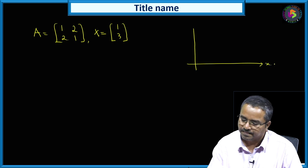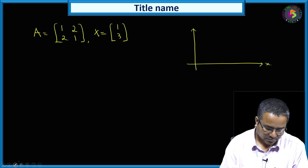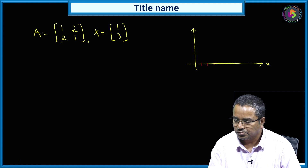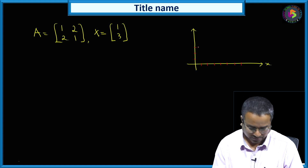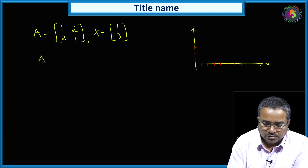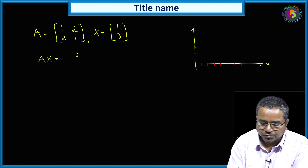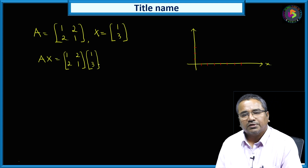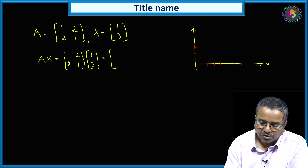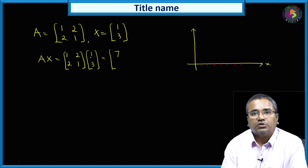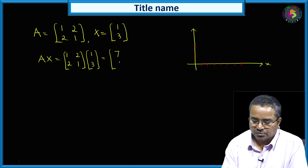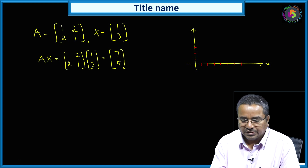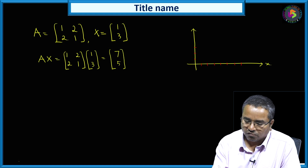This is the x-axis and this is the y-axis. If you multiply A times x, the matrix A is [1,2; 2,1] of order 2 by 2, and x is [1, 3] of order 2 by 1. So 1×1 + 2×3 = 7, and 2×1 + 1×3 = 5. We now have Ax = [7, 5]. I can plot vector x = [1, 3] in the graph.